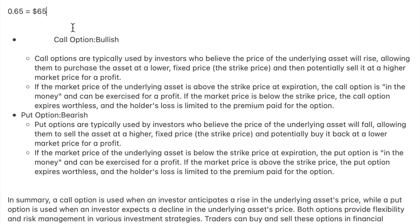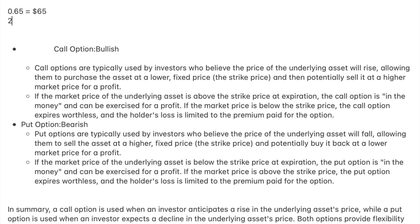If you think a stock is going to go up very quickly in a short period of time, then you would want to buy an option over a share. For example, if the stock price moves $1, the option could move $2 instead — that's the reason you want to buy an option over a share. Options move much more quickly. If the share only moves a dollar, then buying a share gives you only $1 profit, but with an option you get $2 profit. So if it becomes $2.65, that's equivalent to $265 profit.